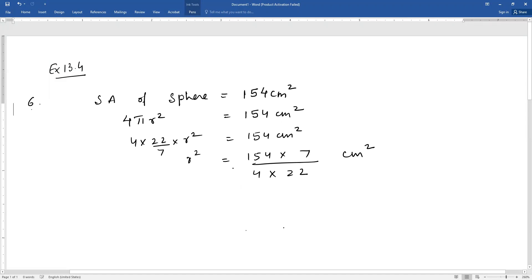You will get the answer in cm². And then you have to find the radius by taking the square root. Here we will cancel: 11 2s are 11, now cancel 2 it gives you 7. So r² is equal to 7 × 7 upon 4 cm².